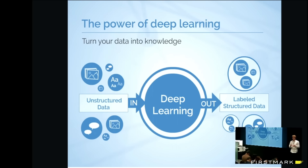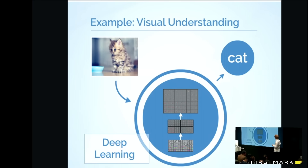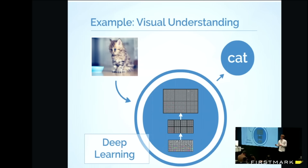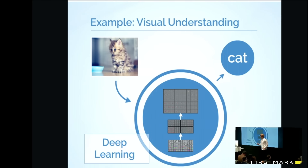The second revolution was in computer vision — that's one I'll talk about a lot today — where we essentially can now very accurately identify objects in images. I'll show how easy it is now to train your own image classifier and automatic image labeler. And then the third revolution that's actually happening right now is using natural language processing to train these models and automate different tasks, essentially extracting structured information out of your unstructured data.